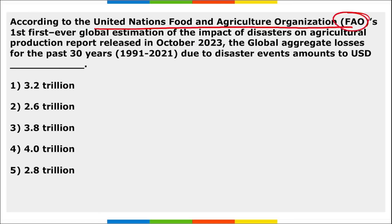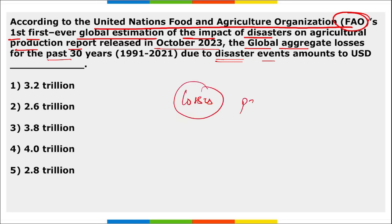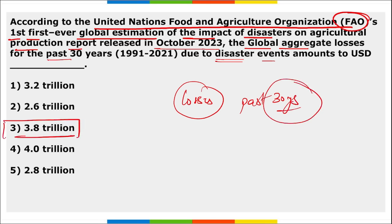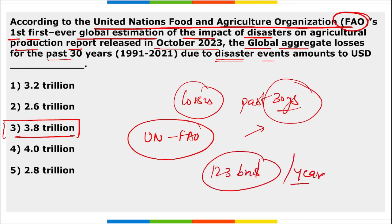According to FAO's first-ever global estimation of the impact of disasters on agricultural production report released in October 2023, the global aggregate losses for the past 30 years due to disaster events amount to $3.8 trillion, corresponding to around $123 billion per year. Disaster events include floods, droughts, insect infestations, storms, disease, and war.